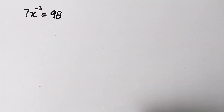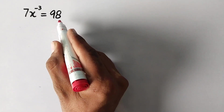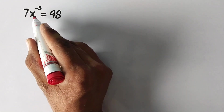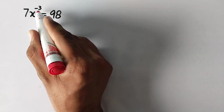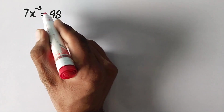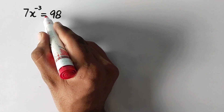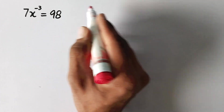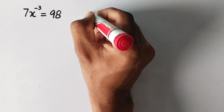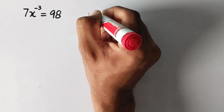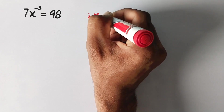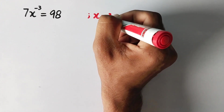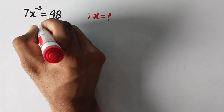Hello everyone. Today we have to solve the problem 7x to the power minus 3 equal to 98, and we have to find the value of x. Let us see the solution.